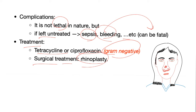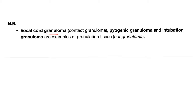Please beware: just because something says 'granuloma' doesn't necessarily mean it's an actual granuloma. For example, vocal cord granuloma is not a granuloma — it's just granulation tissue. Pyogenic granuloma, intubation granuloma — all of these are not actual pathological granulomas. These are just granulation tissue. It's a wrong name but it's written everywhere, so please be careful.